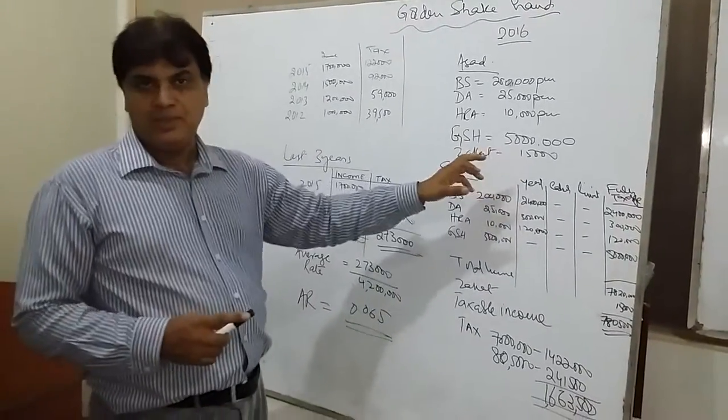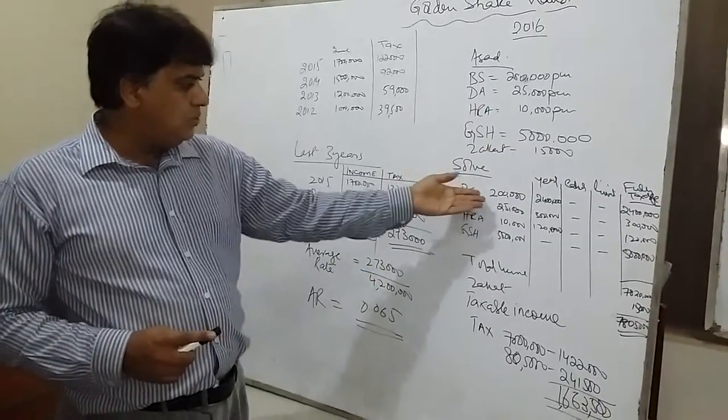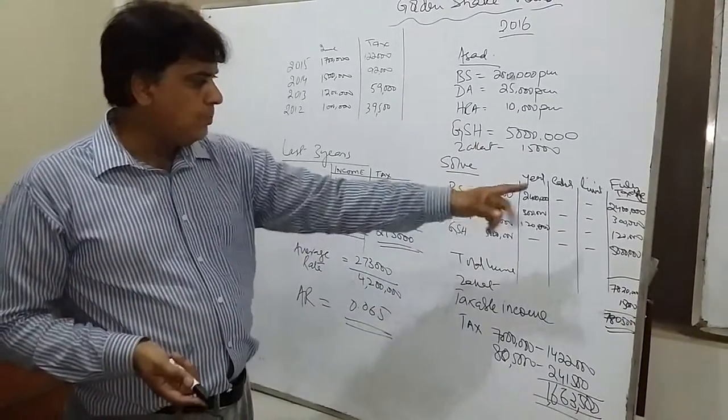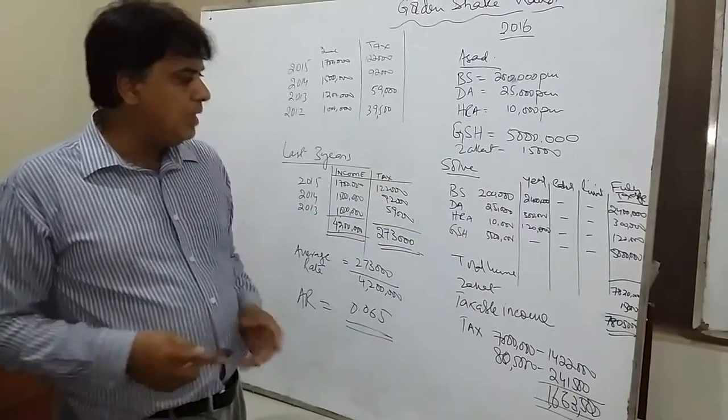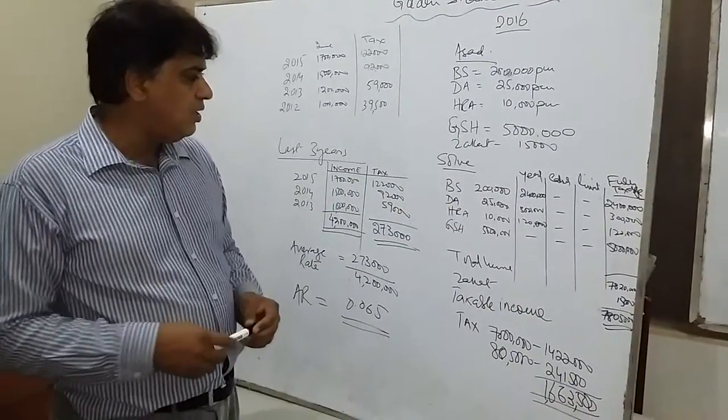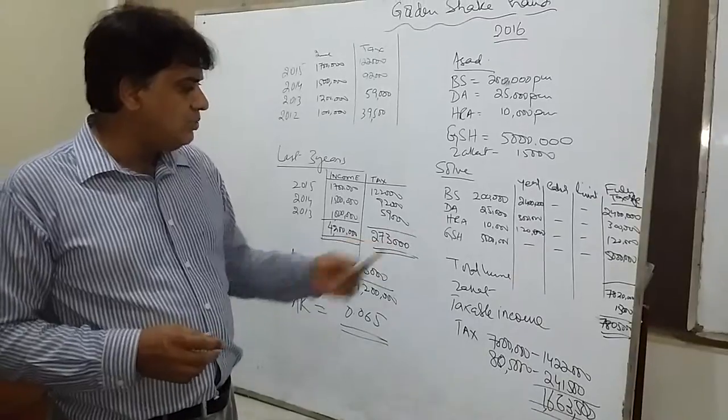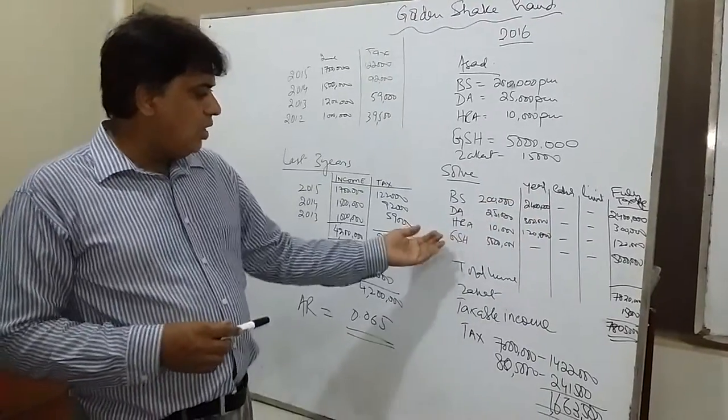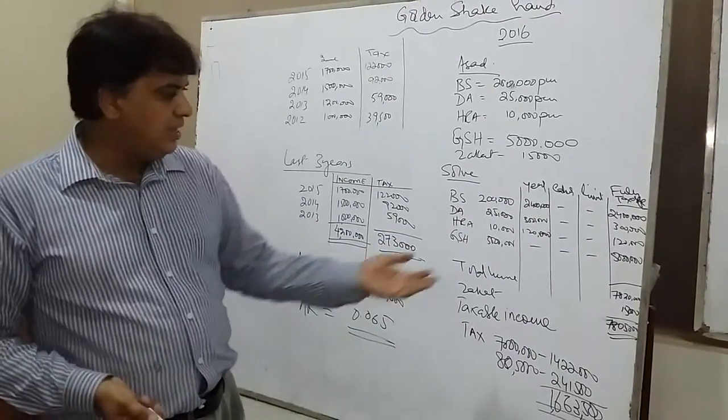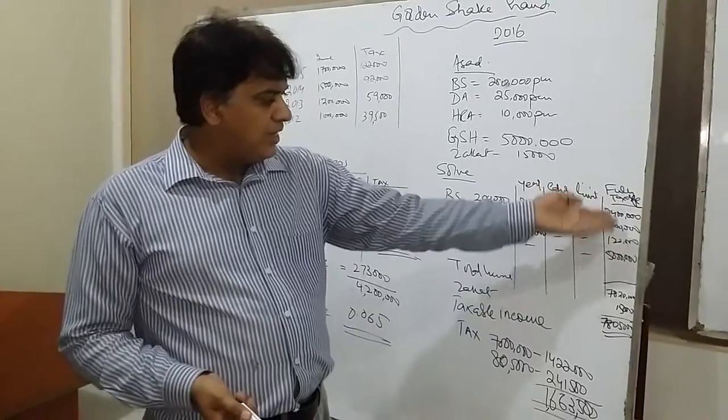The Zakaat has 15,000 per month. We will solve this. We will get 24,000 per month which is 25,000 per month because 3,000,000 per month. House rent allowance is 10,000 because 1,300,000 per month. And Golden Shake Hand is 50,000 per month.